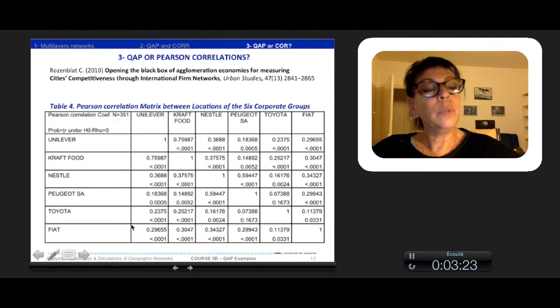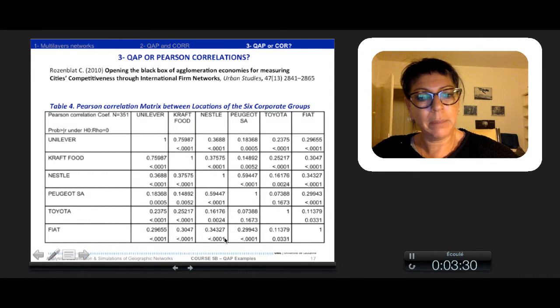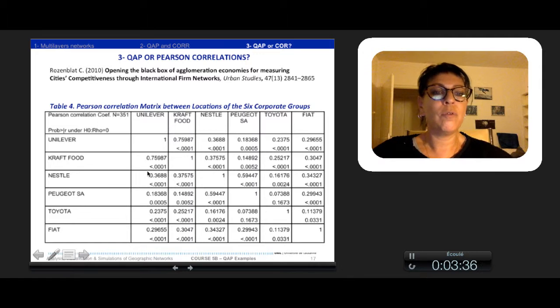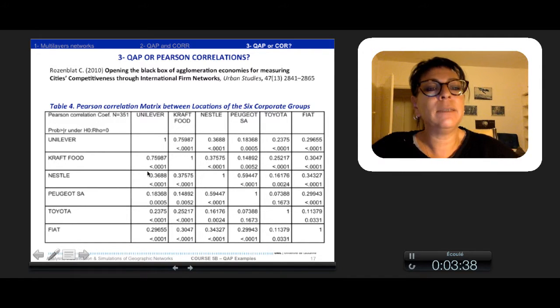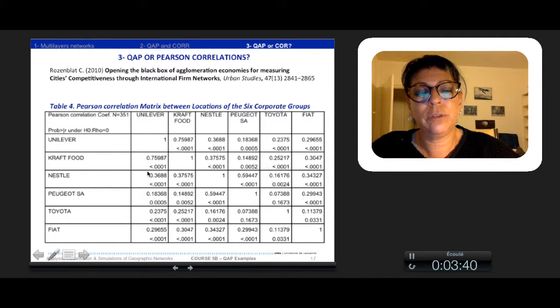We correlated the nodes of the six networks from two sectors: three firms from agro-food industry and three firms of automobile sector. This is a symmetric matrix here. All the correlations are positive, but with different levels of similarities of co-locations. The higher correlation is between Kraft Food and Unilever, who share essentially the same market all over the world.